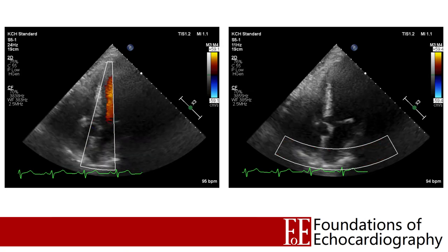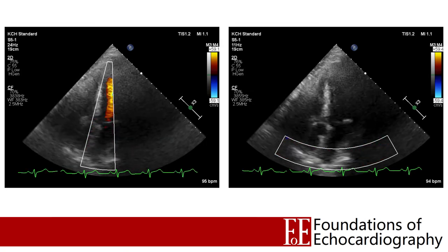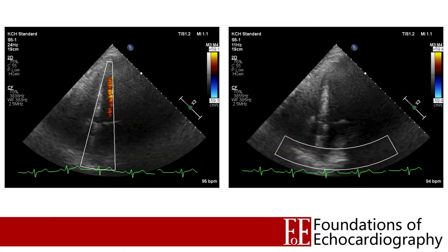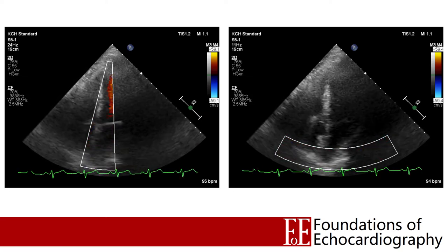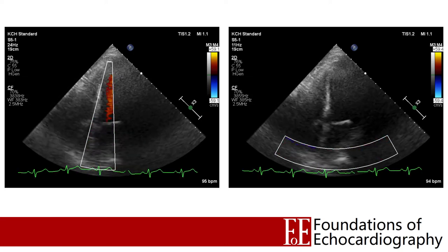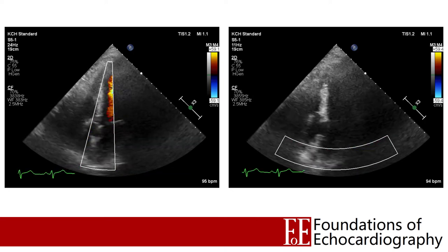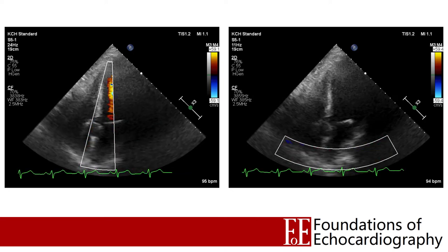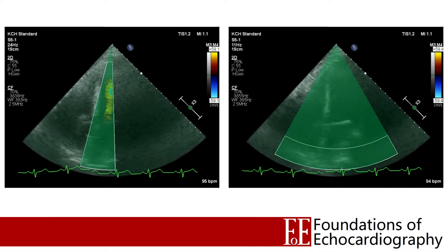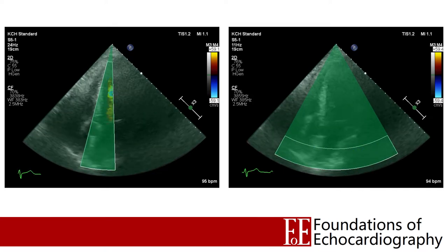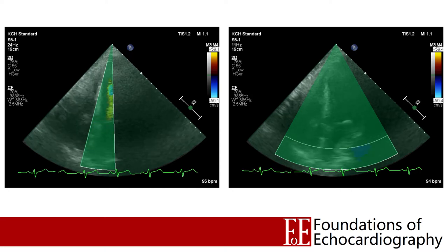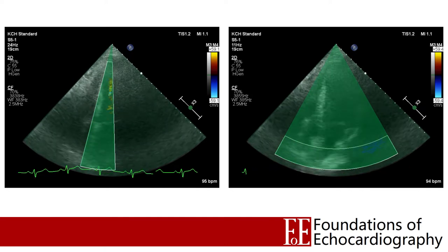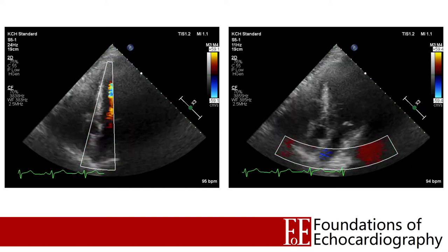Let's take a look at an exaggerated example. Here we've got two apical 5 chamber views, both with a sector width of about 90 degrees and a depth of 19 centimetres, and both clips have a colour box on occupying a roughly similar area on the image. But the clip on the left, which has a very narrow colour box, has a frame rate of 24 frames per second, whereas the clip on the right, with a very broad wide colour box, has a frame rate of just 11.